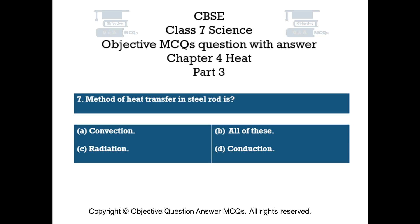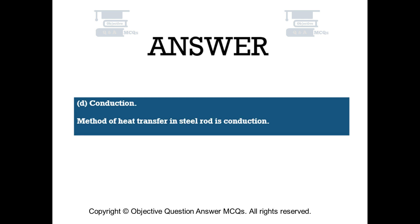Question number 7. Method of heat transfer in a steel rod is: Option A convection, Option B all of these, Option C radiation, Option D conduction. The right answer is Option D — conduction. Method of heat transfer in a steel rod is conduction.